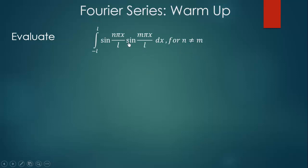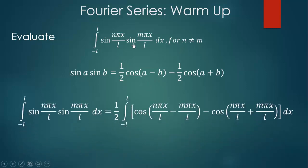So to evaluate this integral, we use this property or this expression for sine a, sine b. We let a equal n pi x over l and b equal n pi x over l. Then this integral now becomes 1 over 2 into bracket cos n pi x over l minus m pi x over l all minus cos n pi x over l plus m pi x over l.